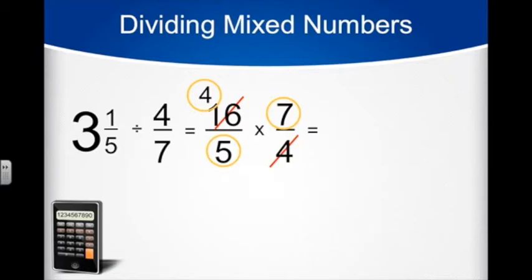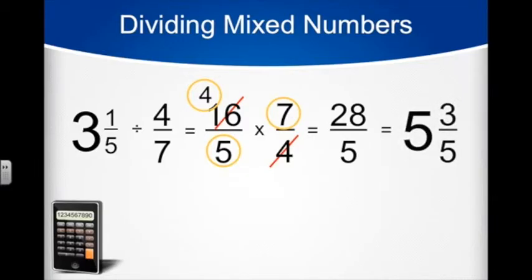4 times 7 is 28, so our answer is 28 5ths, which equals 5 and 3 5ths.